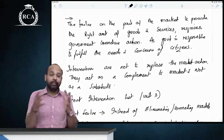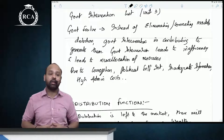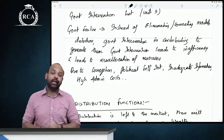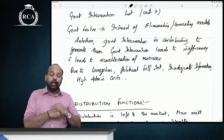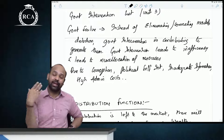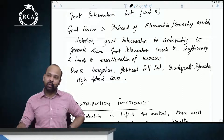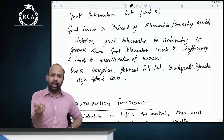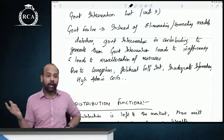We also discussed the concept of government failure. There can be instances where instead of correcting the market's misallocation of resources, government intervention might actually create inefficiencies and result in further misallocation. This can happen because of corruption, political interests, and inadequate information.